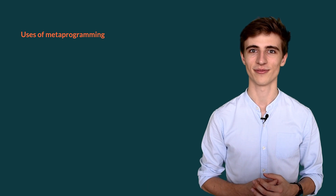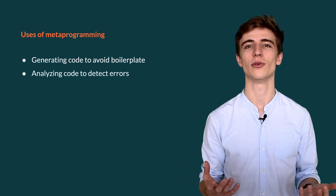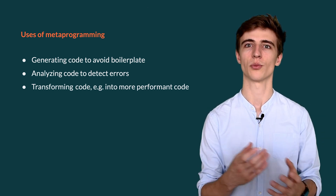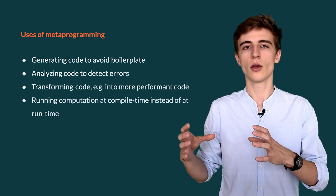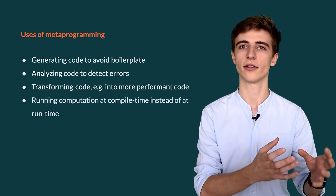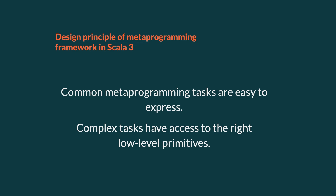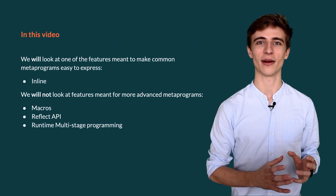What are some of the uses of metaprogramming? One possible use is to generate code so that you don't have to write too much boilerplate. Another possible use is to analyze existing code in order to search for errors. We can also take an existing program and output another program which is more performant but does the same thing, or we can try to run some of the runtime computation at compile time instead. These last two goals are things that we will be writing in this video. In Scala 3, metaprogramming has been redesigned. The design principle here is that simple programs should be easy to express but more complex metaprograms should be possible to express and should have access to the right low-level primitives.